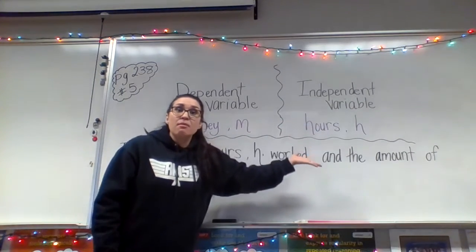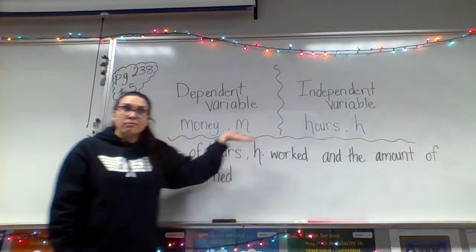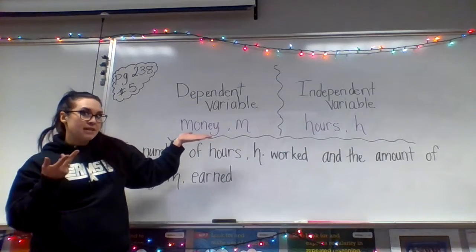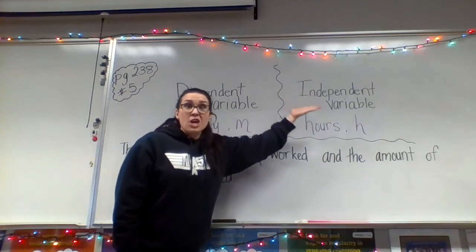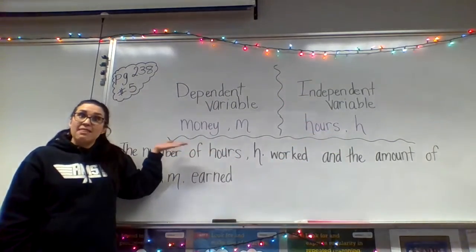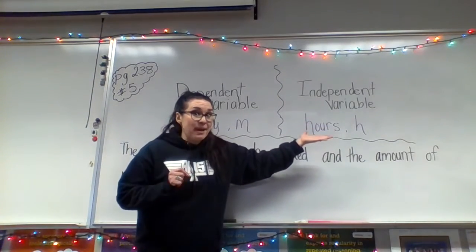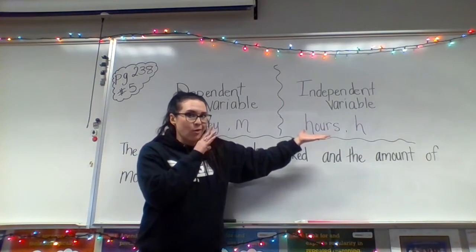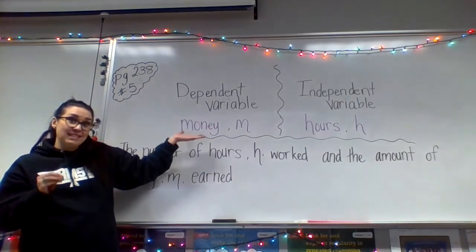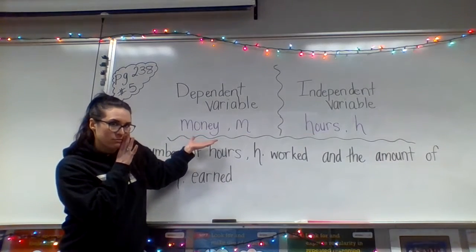Think about it this way: the more time you spend working, the bigger your paycheck. On the flip side, the fewer hours that you work, the less money you are going to make. So the number of hours worked is our independent variable — H — and the dependent variable is the amount of money you make — M.